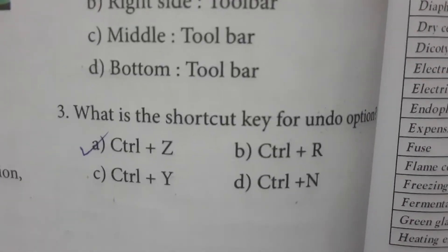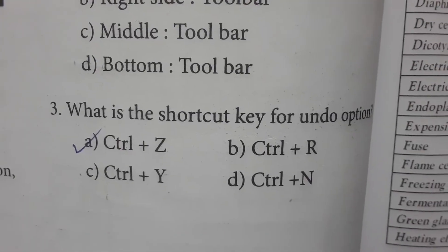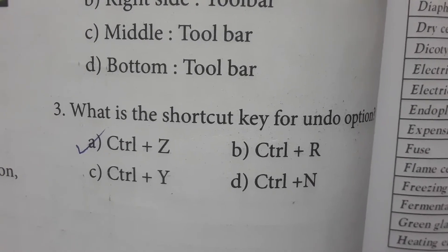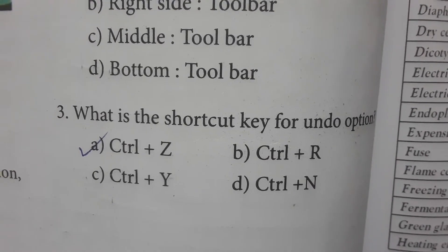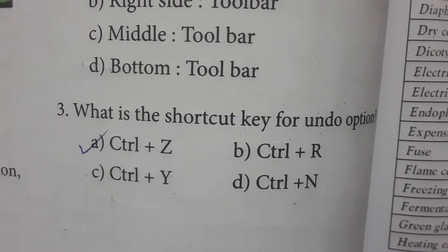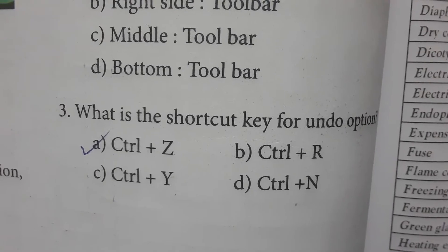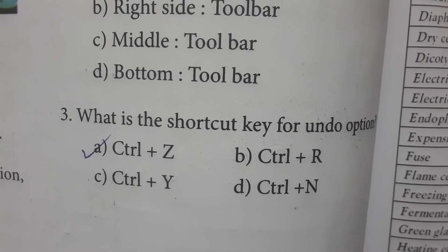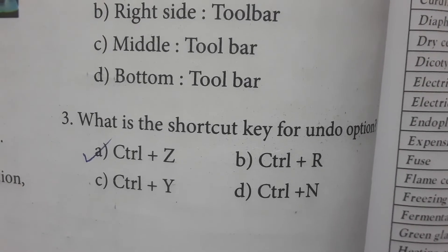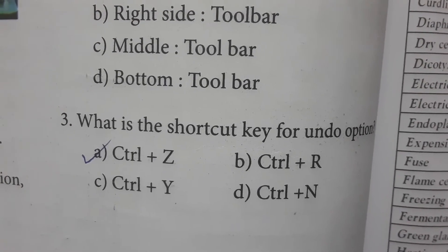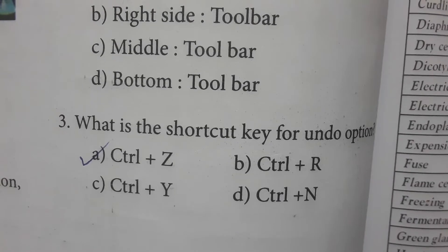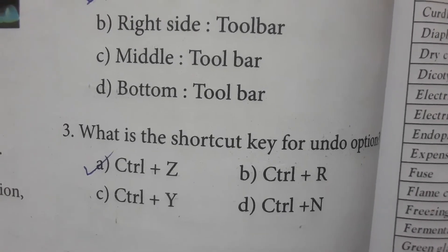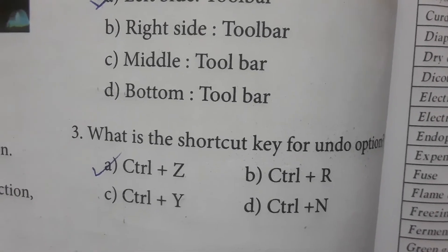What is the shortcut key for the undo option? If you want to undo, you should press the Ctrl+Z key simultaneously. That is the shortcut for undo operations.